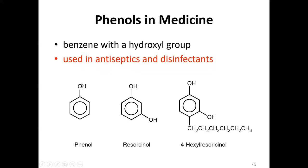When numbering phenol, the OH group is always at carbon one. Here, one other OH group is at position three. You number from there: position one, then proceed in the direction that gives substituents their lowest numbers.